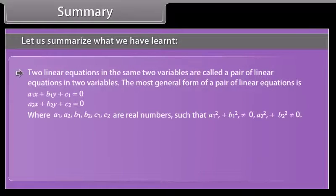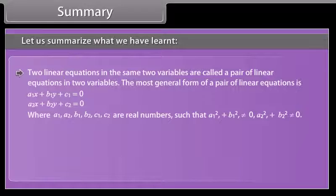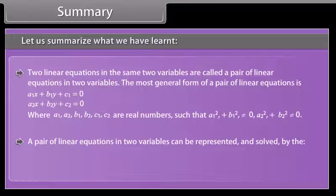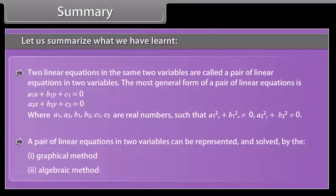Summary: Two linear equations in the same two variables are called a pair of linear equations in two variables. The most general form is a1x + b1y + c1 = 0 and a2x + b2y + c2 = 0, where a1, a2, b1, b2, c1, c2 are real numbers such that a1² + b1² ≠ 0 and a2² + b2² ≠ 0. A pair of linear equations can be represented and solved by the graphical method and algebraic methods.